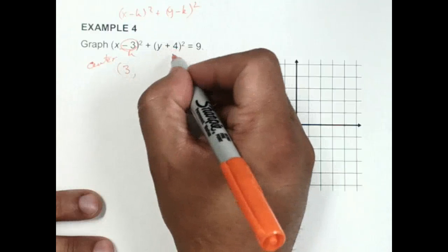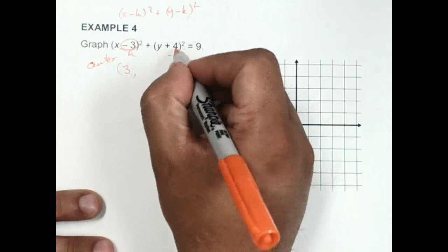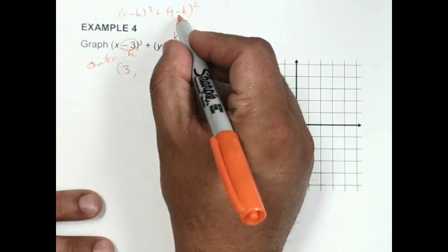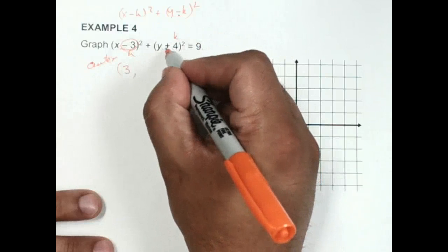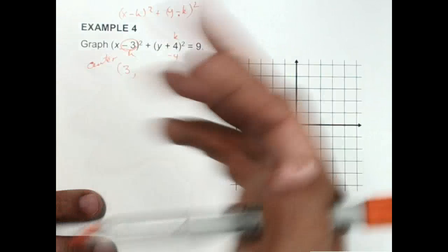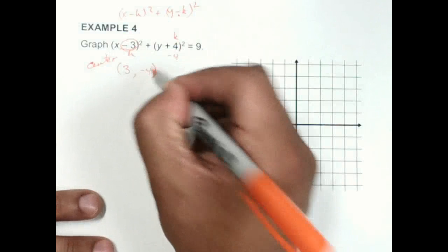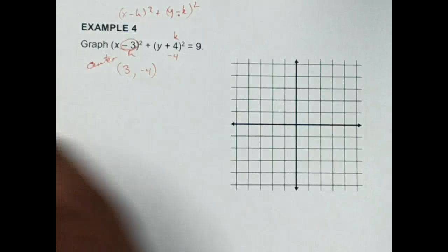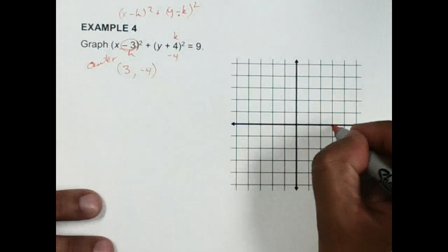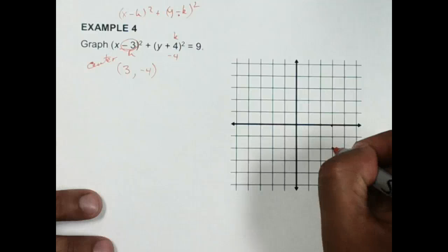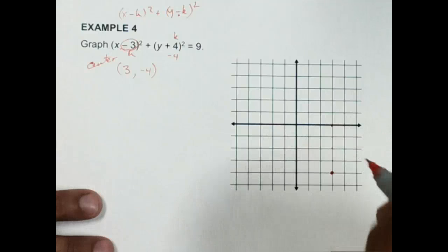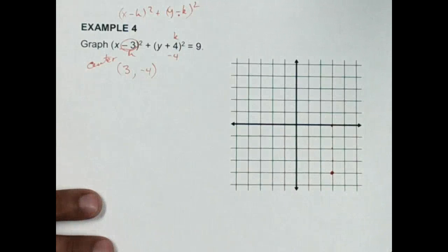My k is going to be -4. Because I have a minus here, notice that you have a plus here. So negative times negative, that's where the positive would come from. So this has to be -4. All right, so then I would go 1, 2, 3 over and 1, 2, 3, 4 down. That would be my center.